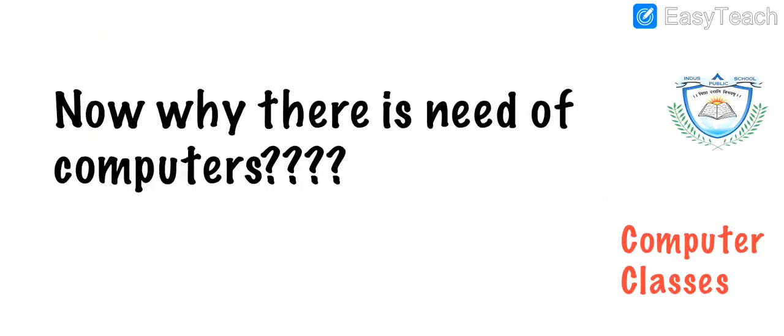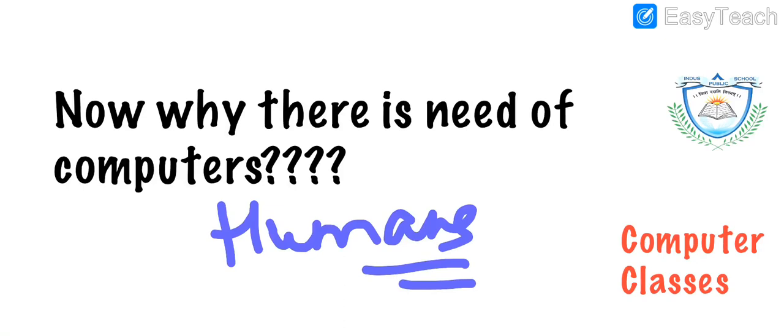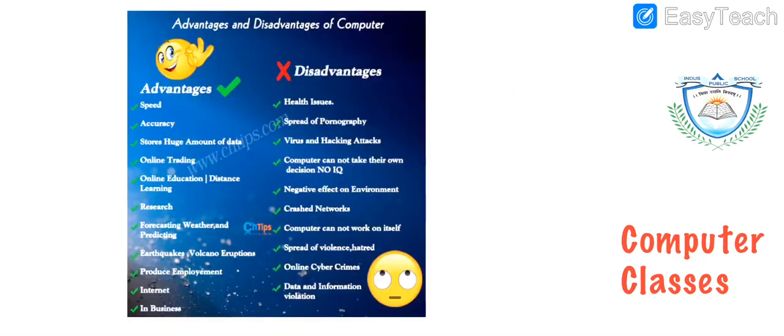I have asked you this question also that when we humans can do all the work, why there is a need of computers? Why do we need computers to work for us? Computer is a machine which is built by humans. Computer can only work when we humans give them the instructions to do work. Just like your parents ask you to do something and then you do the work. Similarly, computer also needs instruction to do the work.